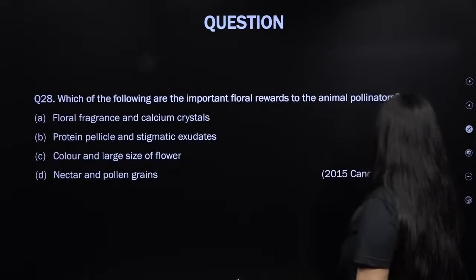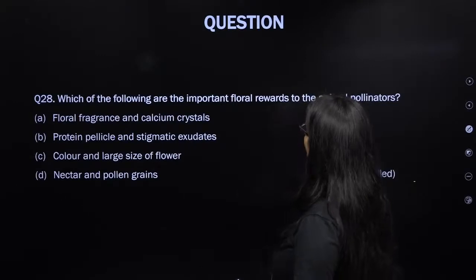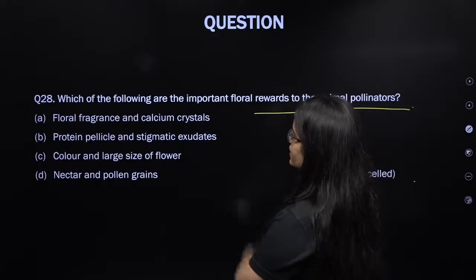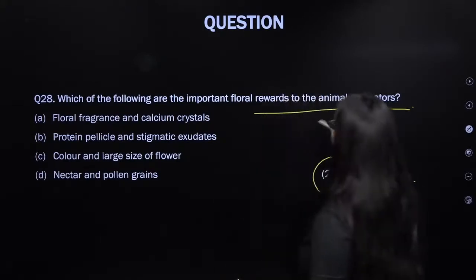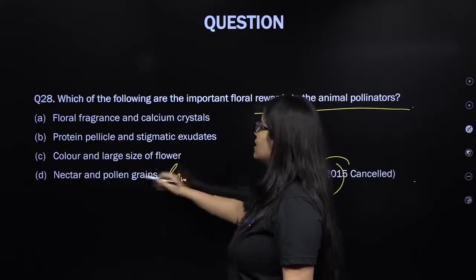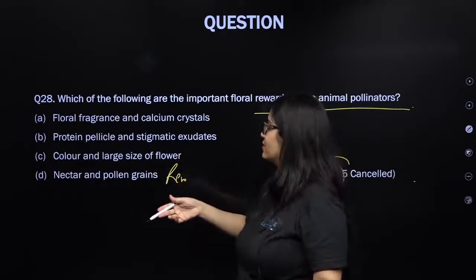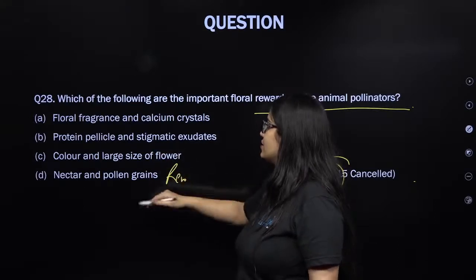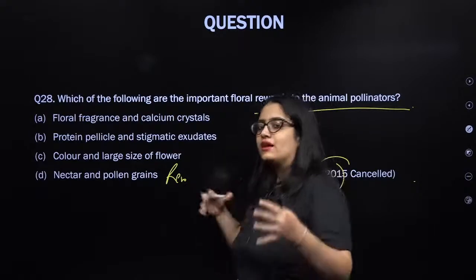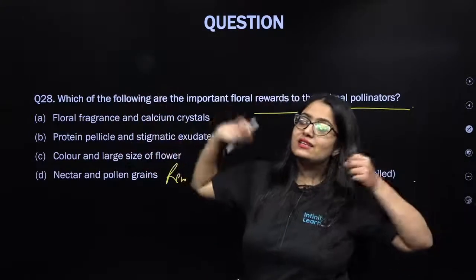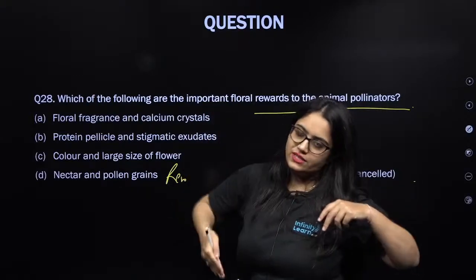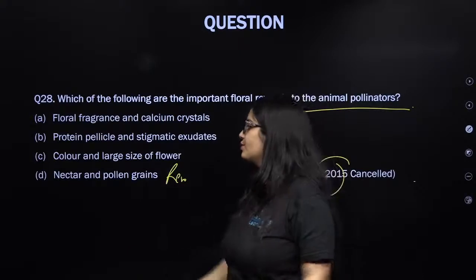From NEET 2015: which are important floral rewards to animal pollinators? Nectar and pollen grains are the rewards. Colorful appearance, large size, and floral fragrance act as attractants — they attract the pollinators — but the actual reward that insects get when they visit the flower is pollen grains or nectar.